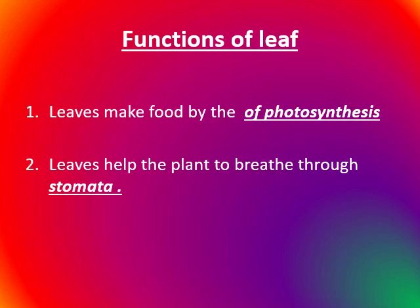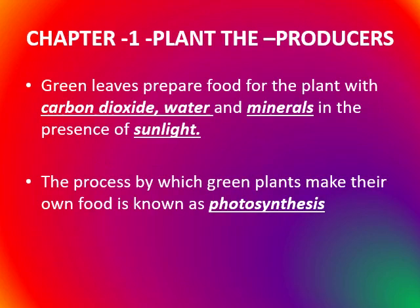Functions of the leaf: Leaves make food by the process of photosynthesis. Leaves help the plant to breathe through stomata. Green leaves prepare food for the plant using carbon dioxide from air, water and minerals from soil, in the presence of sunlight. This process by which green plants make their food is called photosynthesis.